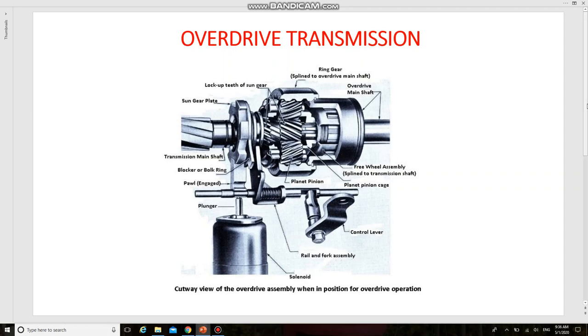Overdrive is a device interposed between the transmission and the propeller shaft to permit the propeller shaft to turn faster than the transmission main shaft. It is the highest gear in the transmission.